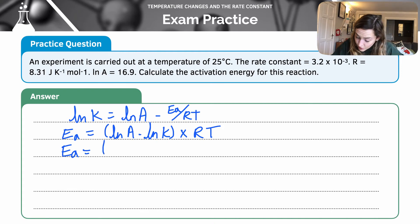So my activation energy is, well, let's plug the values in. So we've already been given our natural log of A, which is 16.9. We've been given k, but we haven't been given the natural log of k. So we need to work that out. So we just plug it into our calculator. And that value is -5.74. So minus a minus is a plus, so I can just put it as plus.